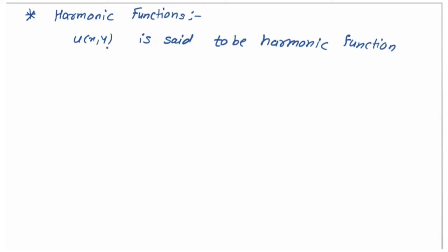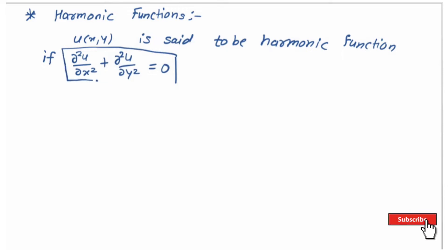A harmonic function u(x, y) is said to be harmonic if it satisfies the condition ∂²u/∂x² + ∂²u/∂y² = 0. This is called the Laplace equation. So the second derivative of u with respect to x plus the second derivative of u with respect to y — if their addition equals 0, then we say u is a harmonic function.